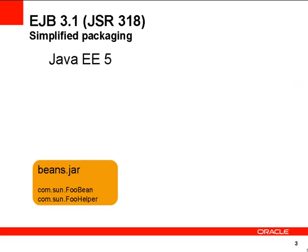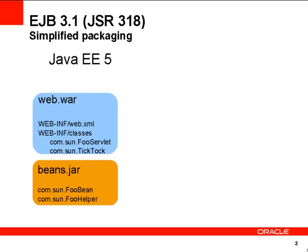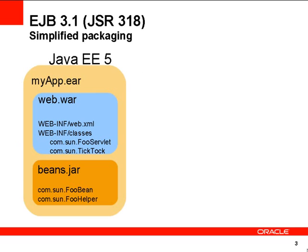The second thing I want to talk about Java is simplified packaging as provided by EJB 3.1. Up until Java EE 5, you had to bundle your beans or EJBs in a beans.jar file. Then your servlets and your web.xml and your index.html all into a WAR file. All of those come together into an EAR file. So there's an EAR, a WAR and a JAR file — too much packaging.